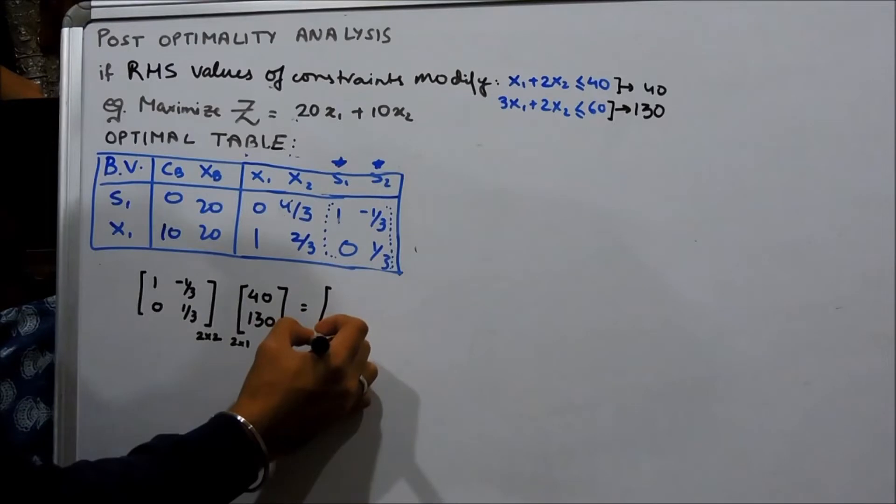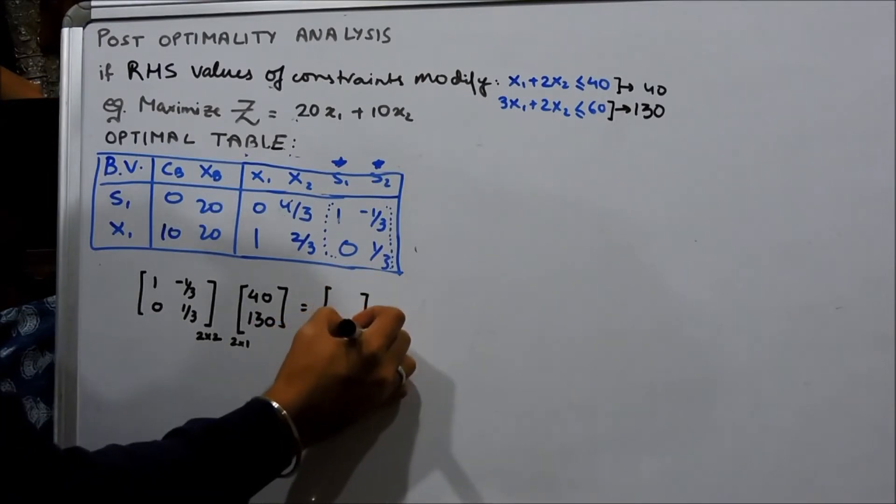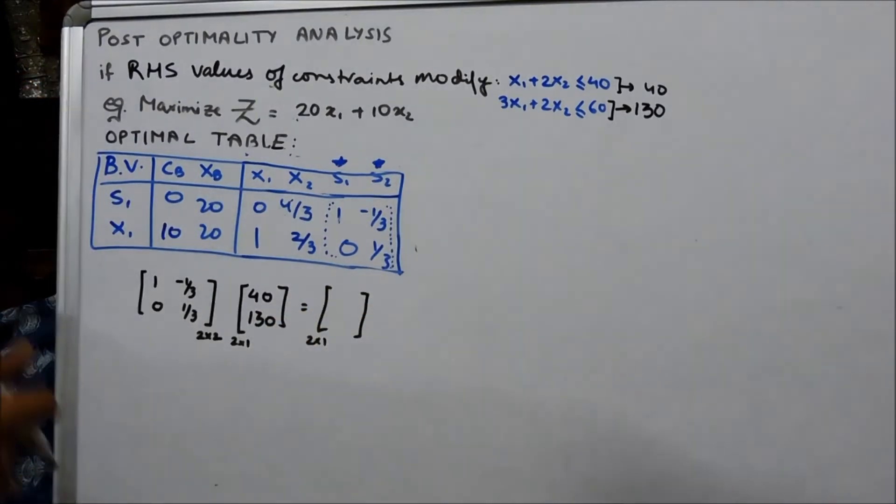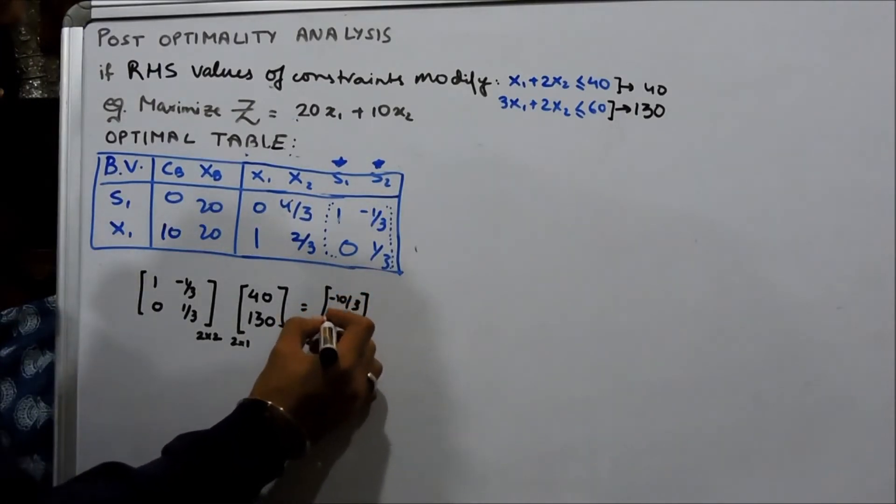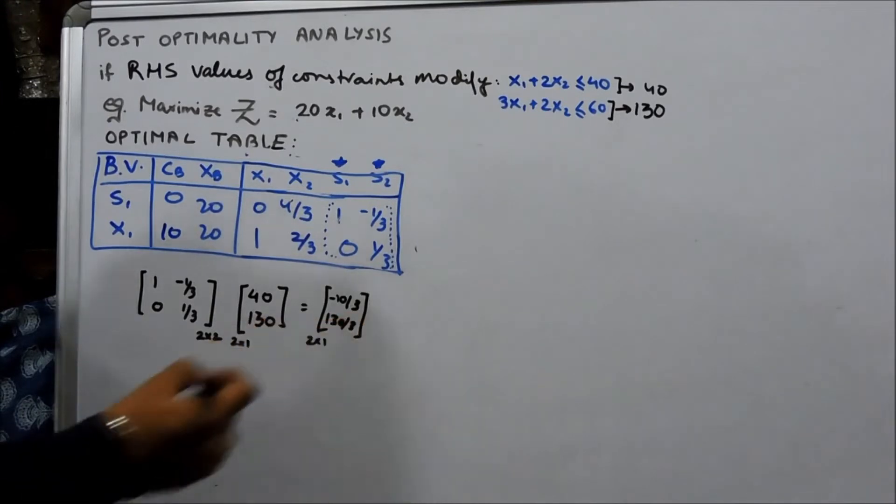So, the answer you will get is a 2 by 1 matrix which is minus 10 by 3 and 130 by 3.